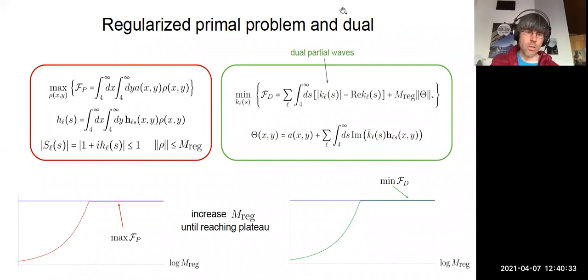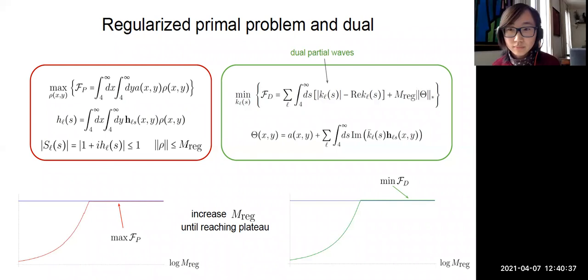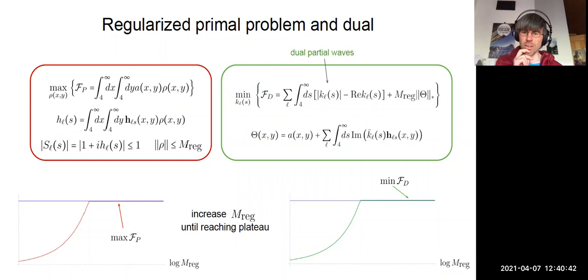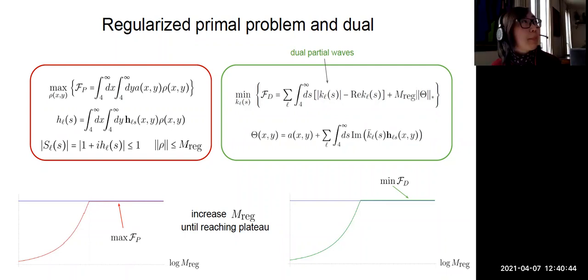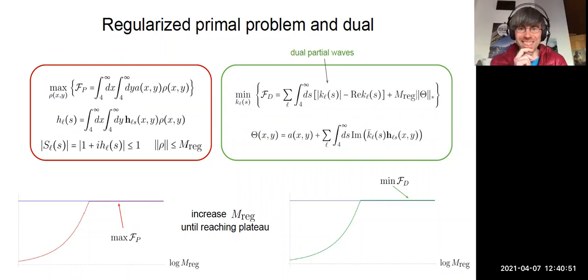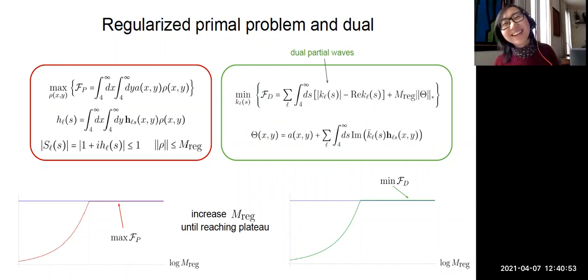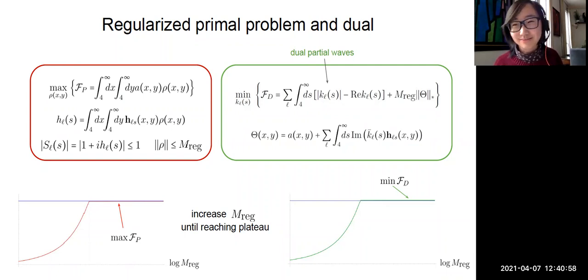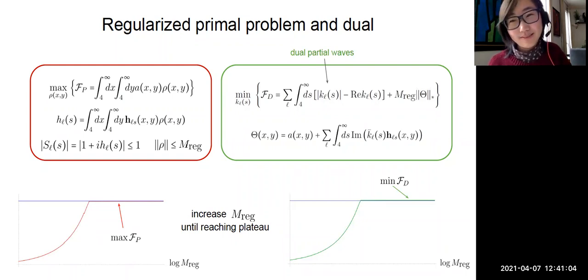Question: What would happen if you ran the numerics without a regulator? The numerics would fail — the solver would report that the dual is infeasible.